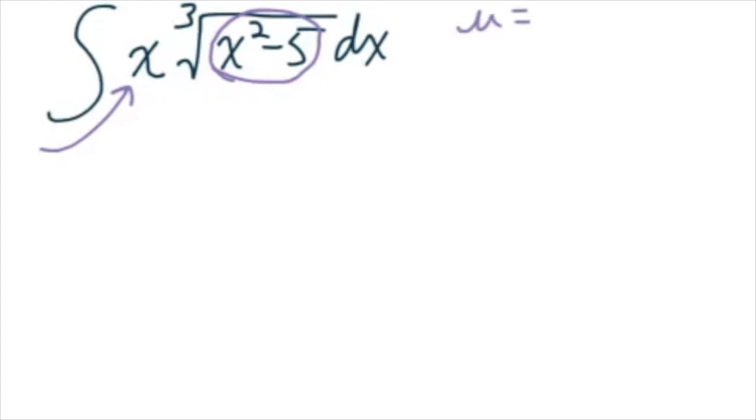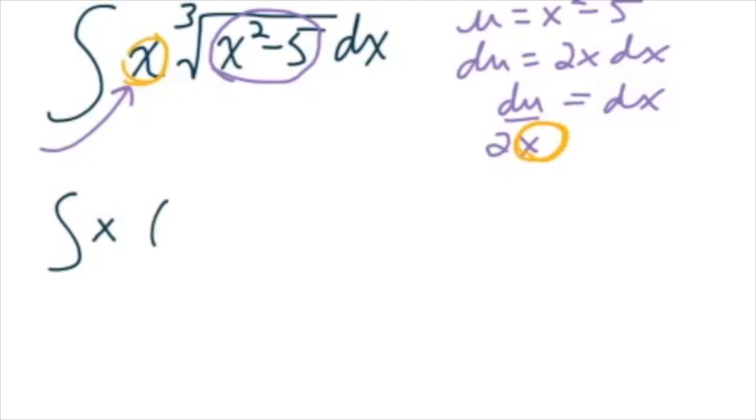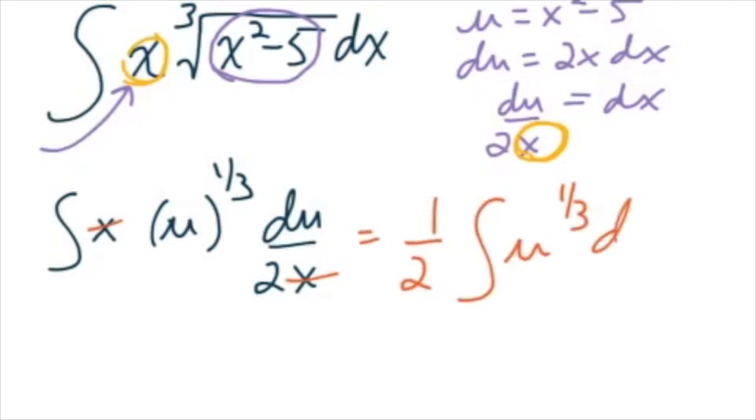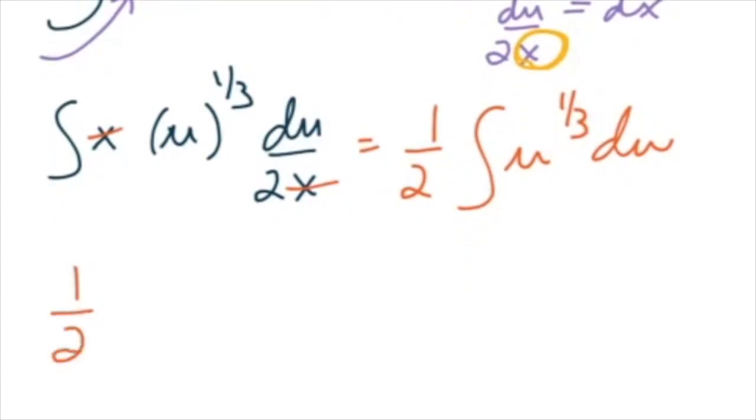So if I let u equal x squared minus 5, then du is going to equal 2x dx, which is going to make dx equal to du over 2x. And if you see this x, that is going to cancel with this x. So when I pull in the u sub, I still have my x. So that becomes a u to the 1 third power. And then dx is actually du over 2x. So I can get rid of my x's. That's cool. 1 half, he slips on out. And now I'm back to the old pump up the power, divide by the pump, right?